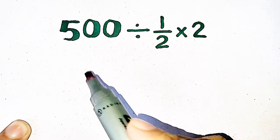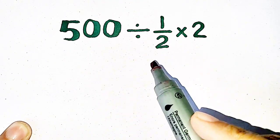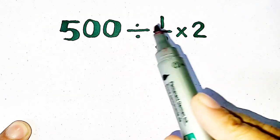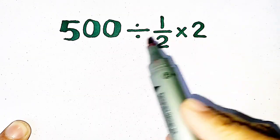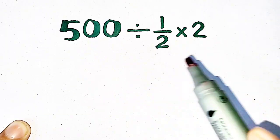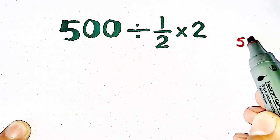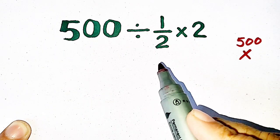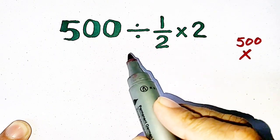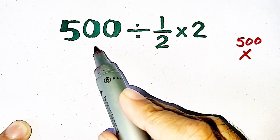While solving this question, it's looking very simple but it's not simple, it's complicated. If 2 and 2 are cancelled, our answer will be equal to 500, but 500 is the incorrect answer. So we have to solve it correctly.